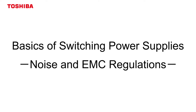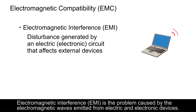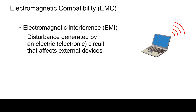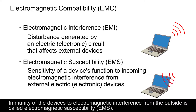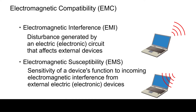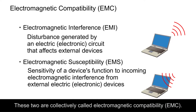As part of the basic knowledge of switching power supplies, we would like to explain the problems caused by electromagnetic waves. Electromagnetic interference, EMI, is the problem caused by the electromagnetic waves emitted from electric and electronic devices. Immunity of the devices to electromagnetic interference from the outside is called electromagnetic susceptibility, EMS. These two are collectively called electromagnetic compatibility, EMC.